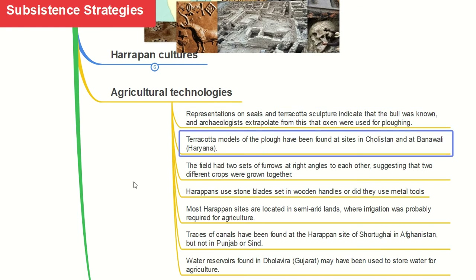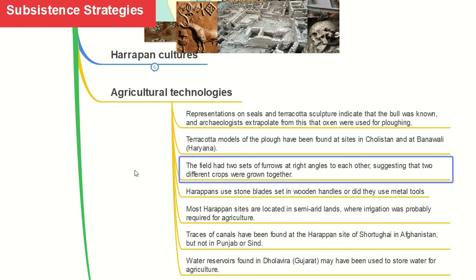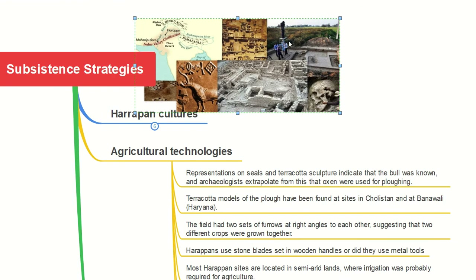Terracotta models of the plough have been found at sites, because archaeologists construct their story with relevant evidence. Such models were found in Cholistan and at Banawali in Haryana. The field had two sets of furrows at right angles to each other, suggesting that two different crops were grown together at the same time.